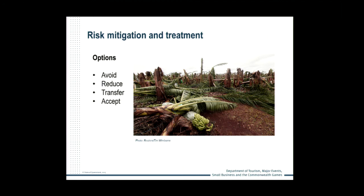Risks for owner-operated or micro businesses will differ from those of small to medium-sized businesses. For example, owner-operators are reliant upon their own health to ensure the sustainability of their business. Should they get sick or injured, their business will cease to function unless a contingency plan is put in place.